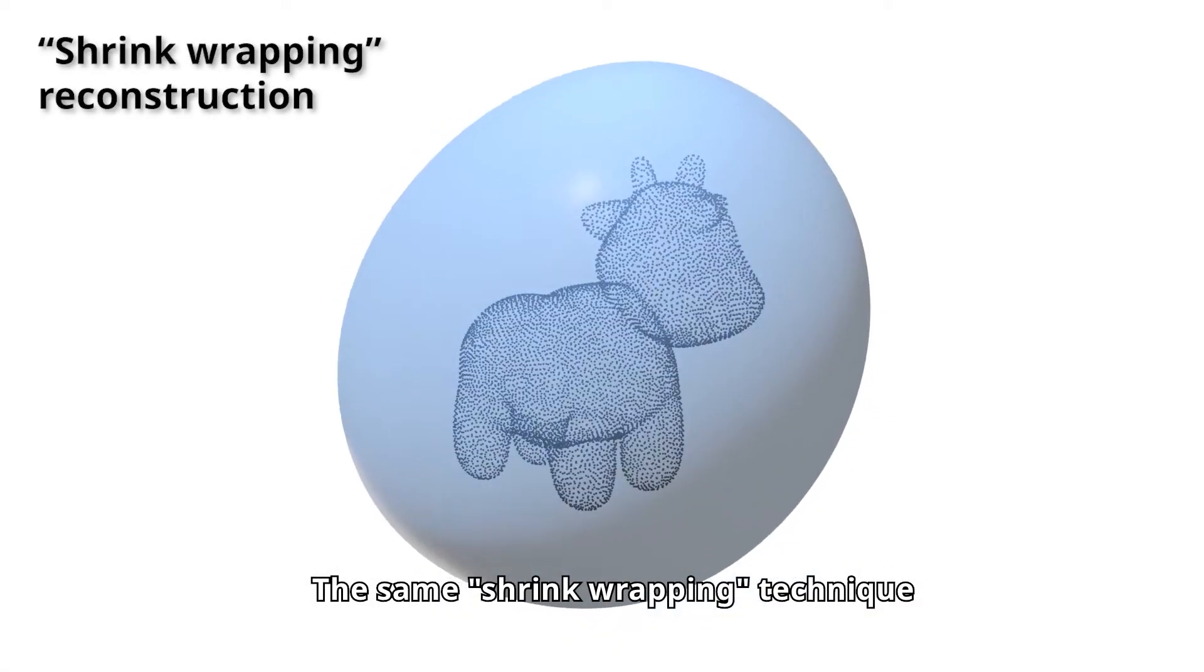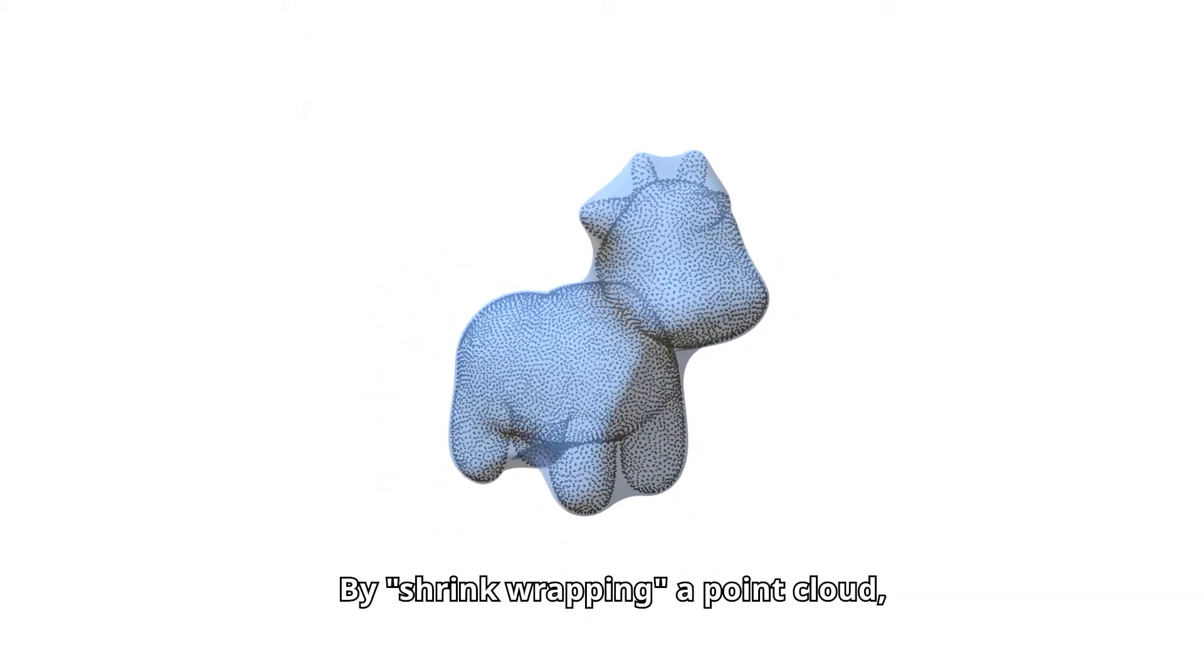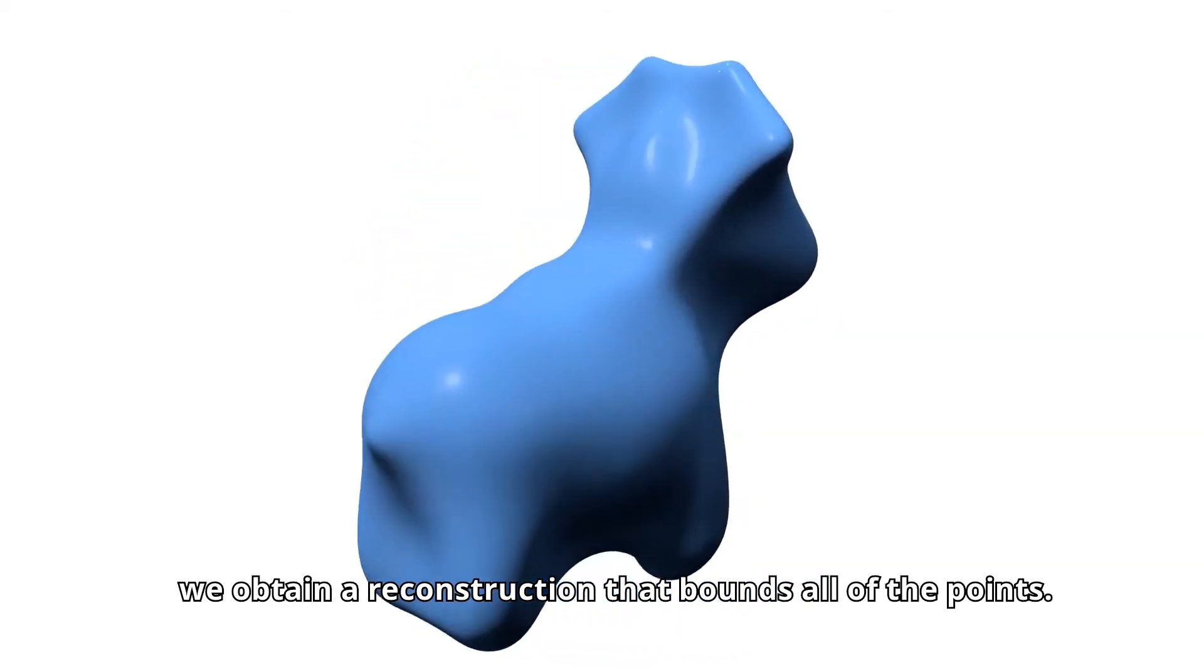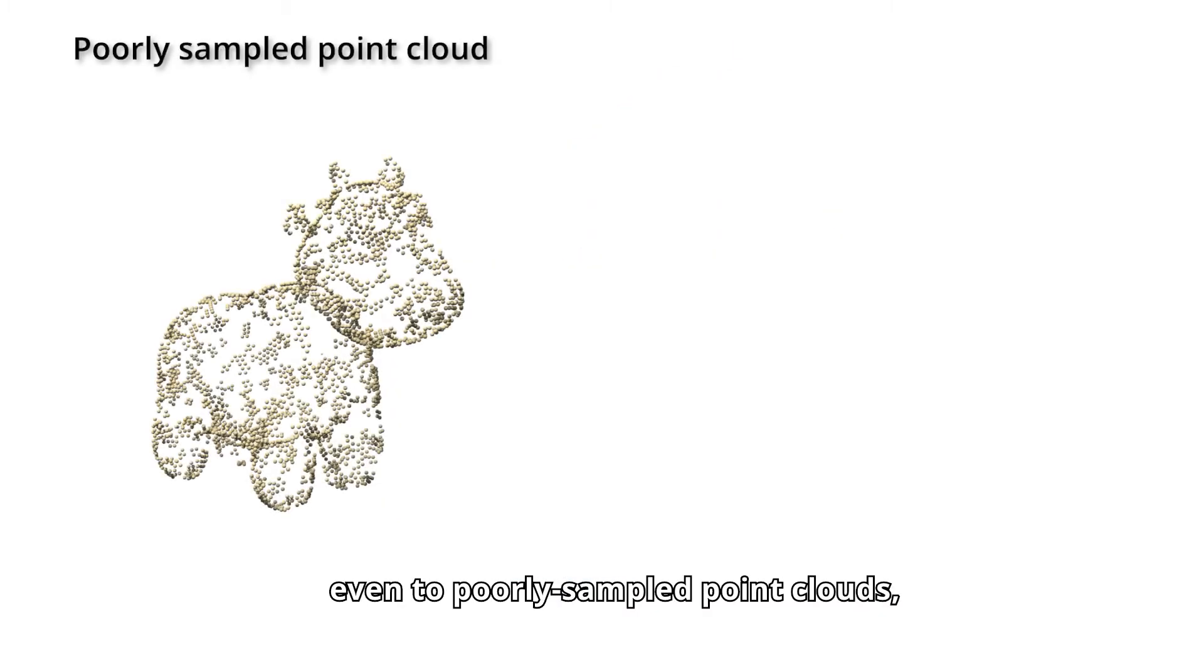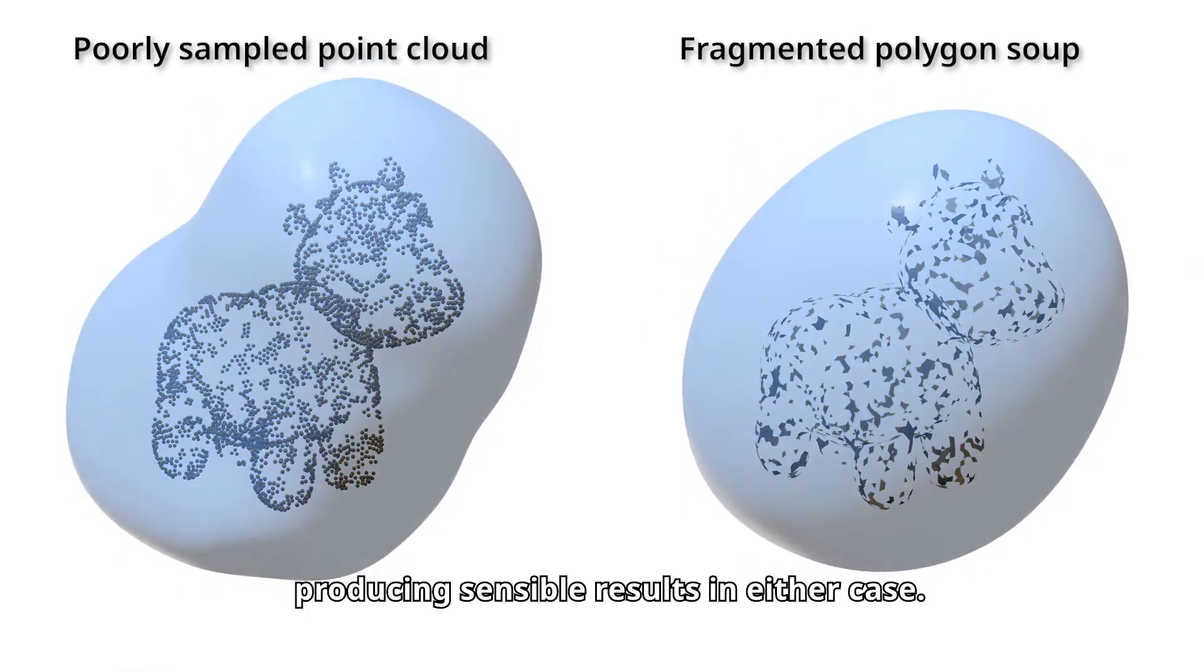The same shrink-wrapping technique can be applied to point clouds with or without normals. By shrink-wrapping a point cloud, we obtain a reconstruction that bounds all of the points. This reconstruction approach can be applied even to poorly sampled point clouds or fragmented polygon soups, producing sensible results in either case.